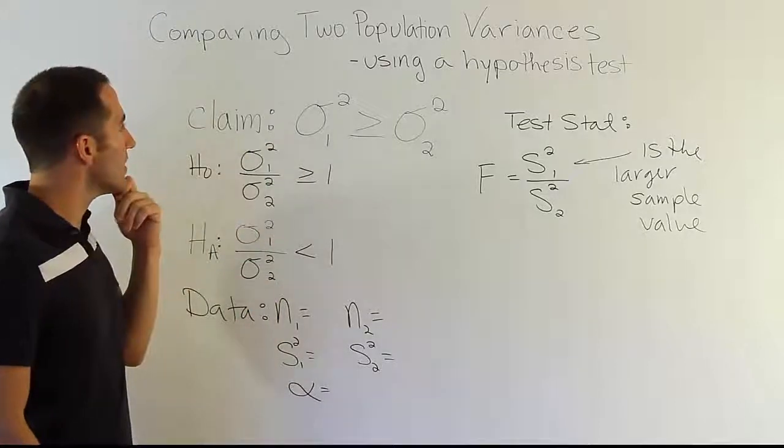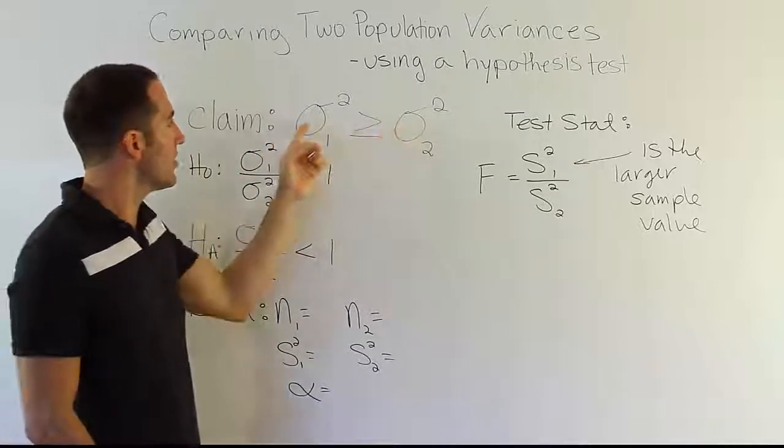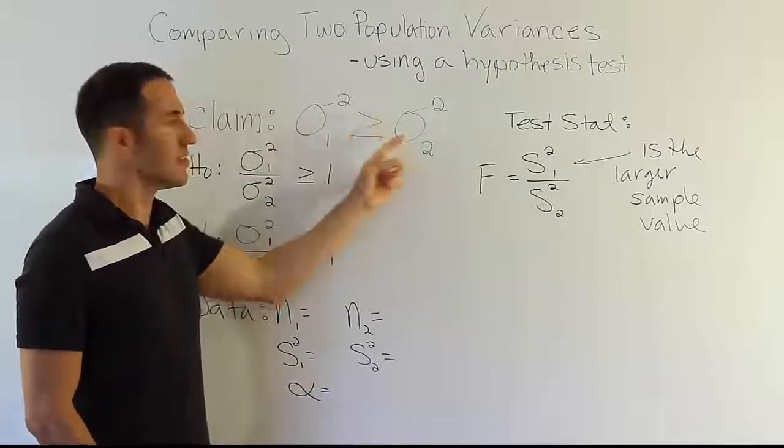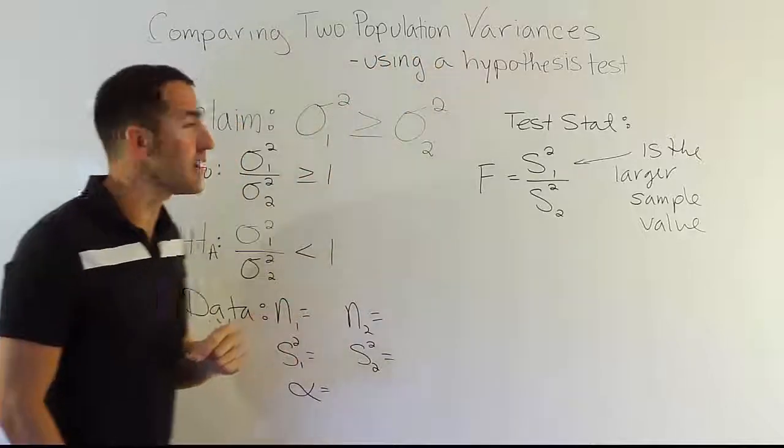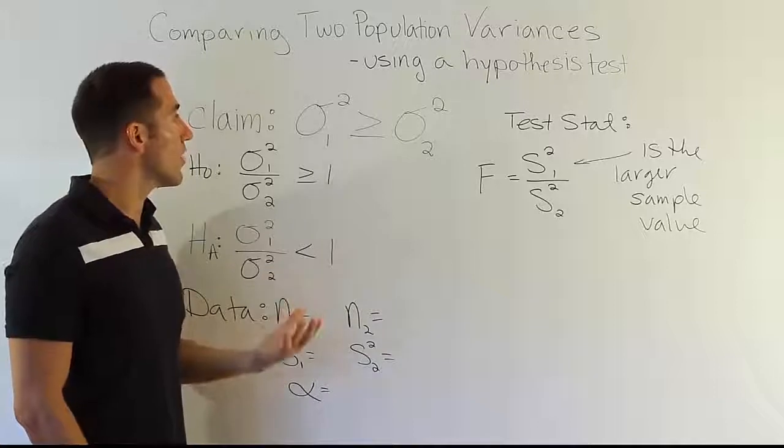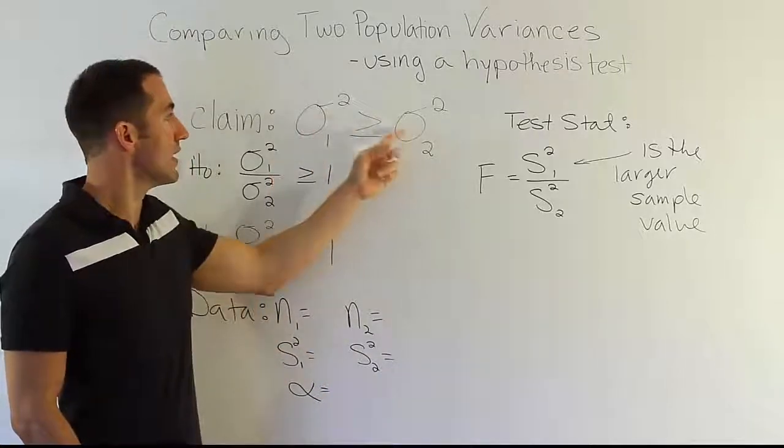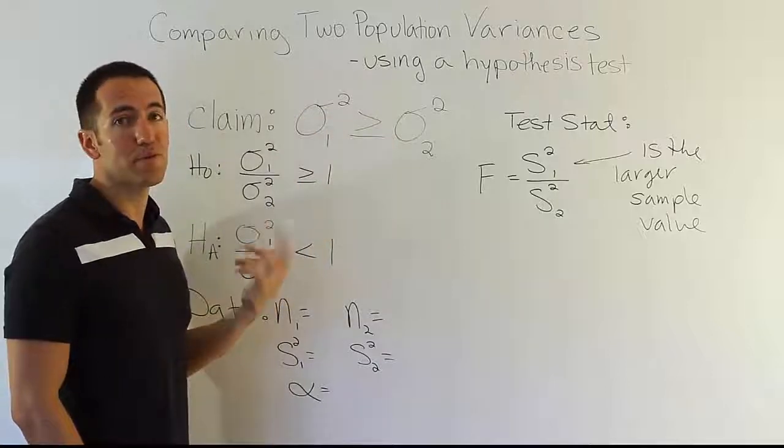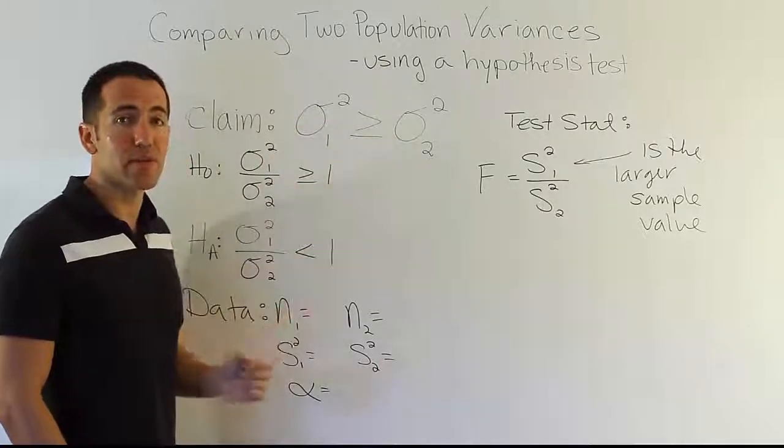First thing you're going to notice is that our claim has the symbols for population variance here, which is probably obvious since we're testing the population variances, but it's going to be a change for us. When we look at our previous procedures, we always had a symbol for either the mean, which was mu, or a symbol for the proportion, which was rho. Now we're looking at sigma squared for the population variances.